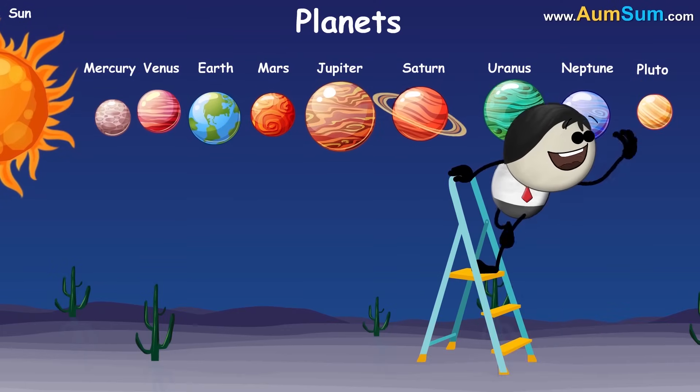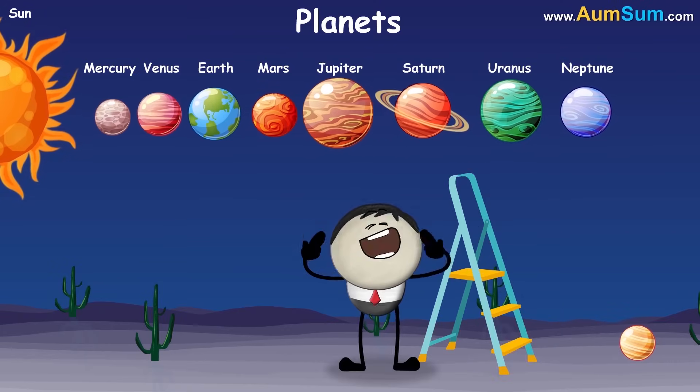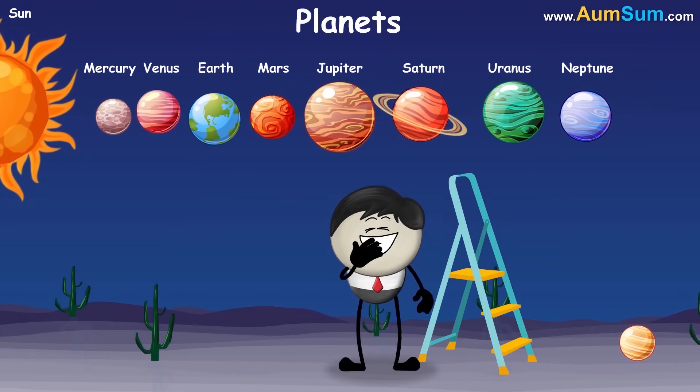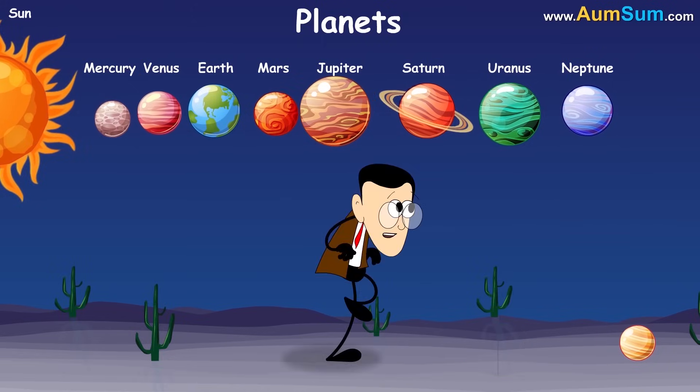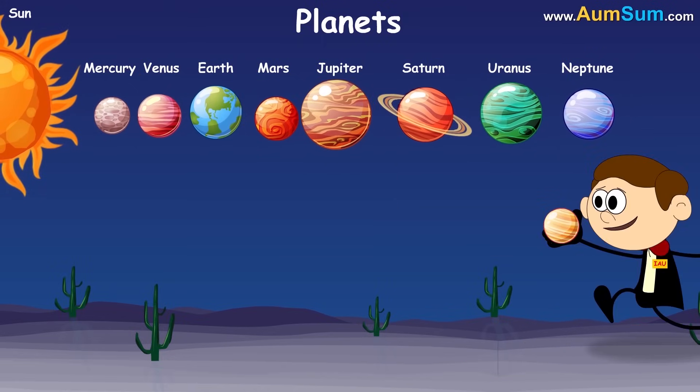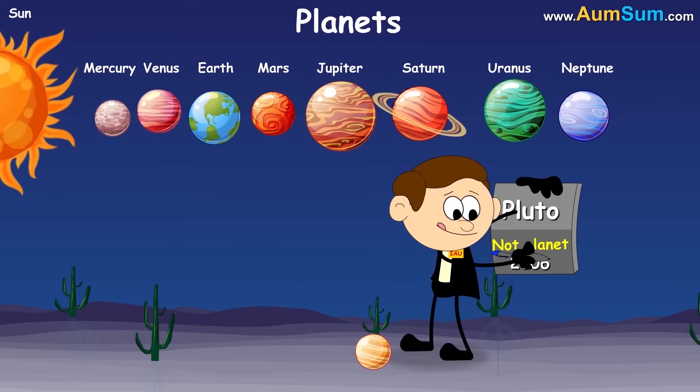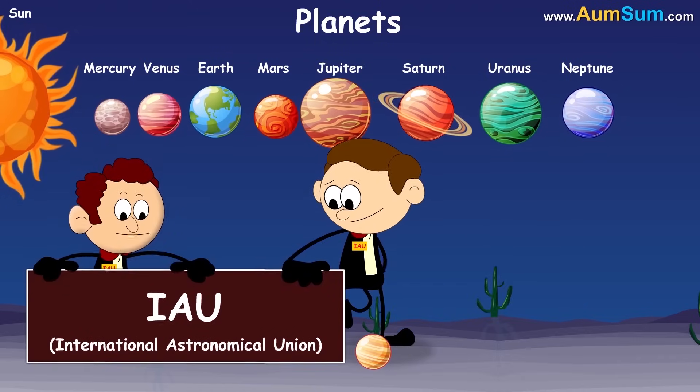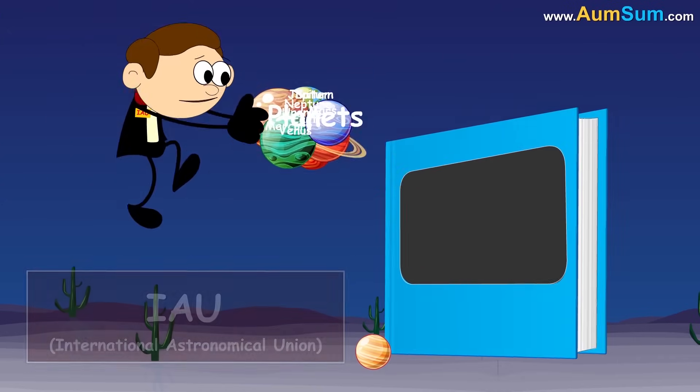Why is Pluto not a planet anymore? Because I am not silly anymore. Now listen. Pluto was discovered by Clyde Tombaugh in 1930. It is not considered a planet anymore because in 2006, astronomers of IAU gave a new definition to the word planet.